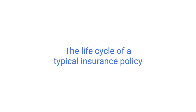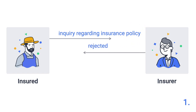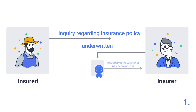Let's look at the life cycle of a typical insurance policy. First, the customer makes an inquiry regarding an insurance policy. By taking out the insurance policy, he or she wants to protect himself or herself against a specific risk. The insurance company examines the customer's application. The application is accepted or rejected. In case of rejection, the customer is informed and no further activities take place.